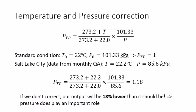So under this example, our PTP is calculated as 1.18, which is 18% higher than unity. So if we forget to apply the PTP correction and we use unity, we use 1 as the PTP factor, our measured output will be 18% lower than it should be.